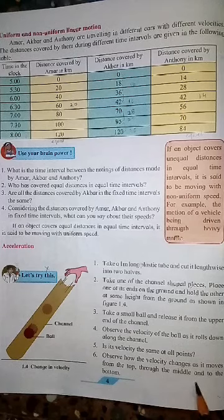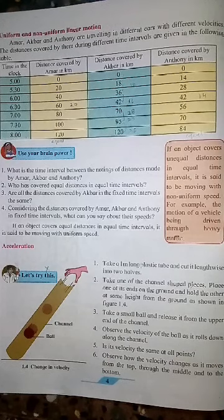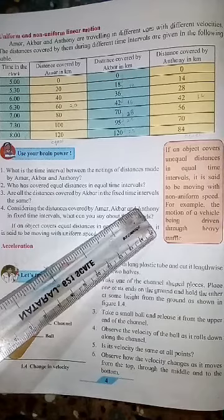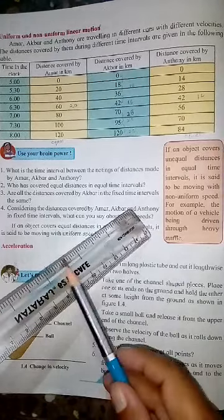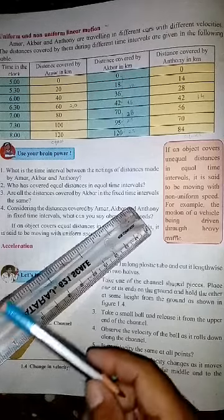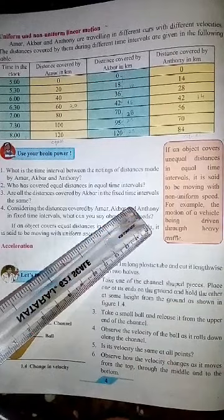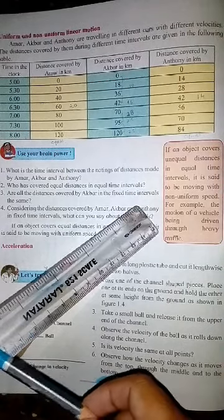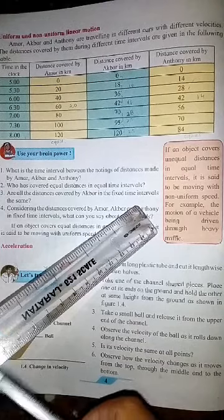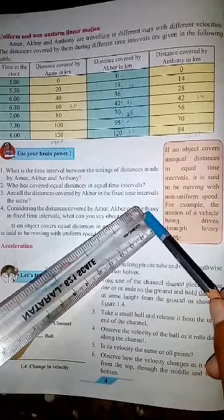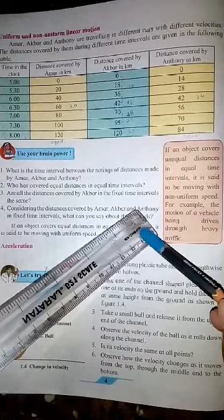Observe how the velocity changes as the ball moves from the top, through the middle, and to the bottom. We take the half piece of the plastic tube, place it in the landing position, and release a ball from that channel. Observe the velocity of the ball — is it the same at all points? Notice the velocity at the start, at the middle point, and at the end.